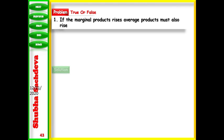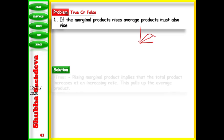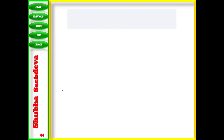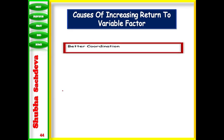Next: if MP rises, average product must also rise. Yes, this is true. When MP rises, it is above AP and rising MP implies TP is increasing at an increasing rate, which pulls average product up. So average product also increases.